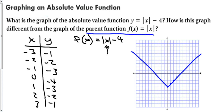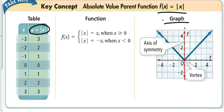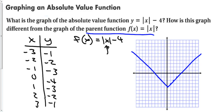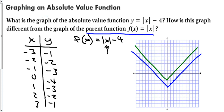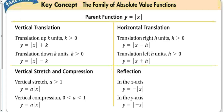Comparing this new function to the parent function: the parent function has values (0,0), (1,1), (2,2), (3,3), (−1,1), (−2,2). If we take the parent function (green) and move it down 4, we get our new function. So the blue function is the parent function shifted down 4. Recalling section 2-6, we can apply all those transformations to an absolute value function.